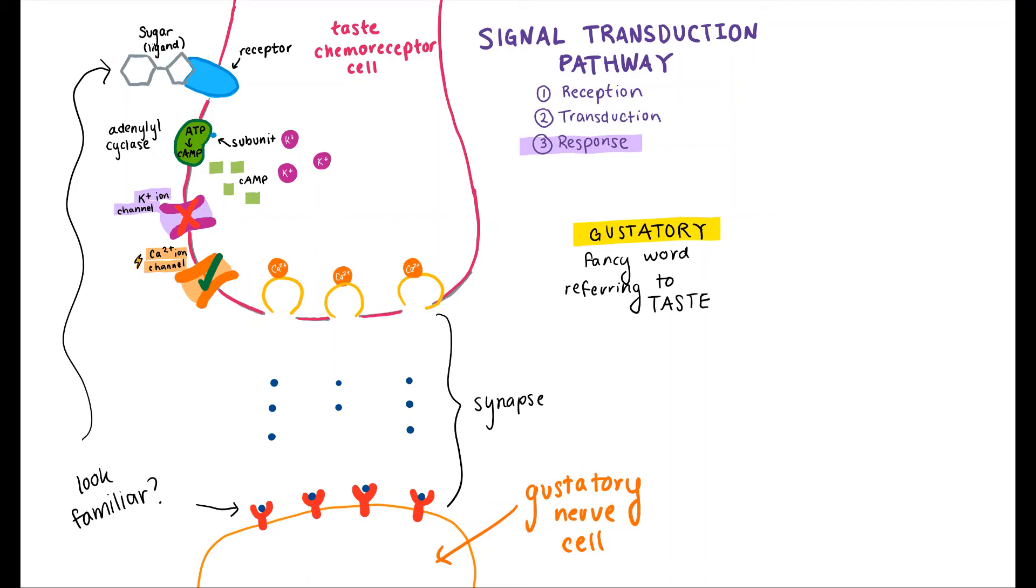The final step is the response. Because the neurotransmitters were able to bind to receptors on the gustatory nerve cell, a message is sent through nerve fibers up to the brain, letting the person know, 'Hey, I'm eating something sweet right now.'